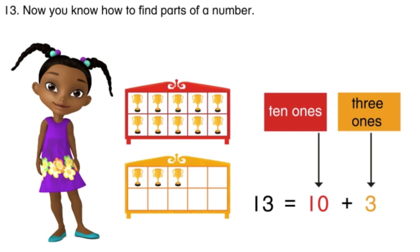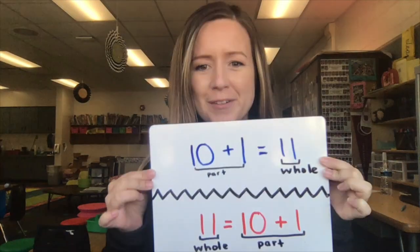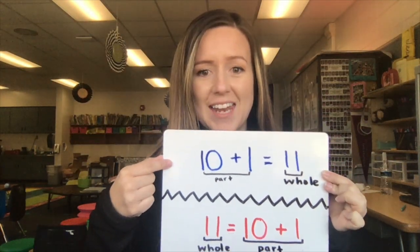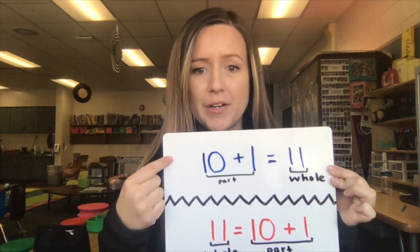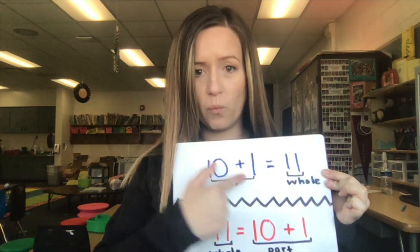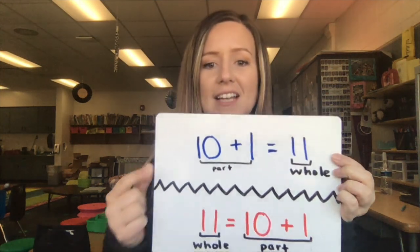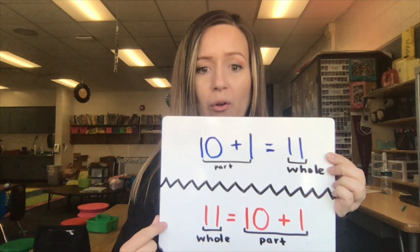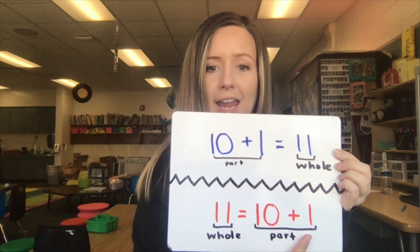Now you know how to find parts of a number. Before I let you go, there is one thing I need to clarify because it's always so confusing. My top equation says 10 plus 1 equals 11 — that's what we did when we were making numbers. We took the parts 10 and 1 and put them together to make the whole 11. Today's lesson has us breaking apart a whole — we had 11 as our whole and broke it into the parts 10 and 1.